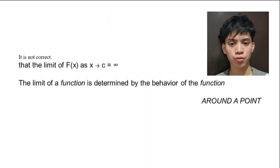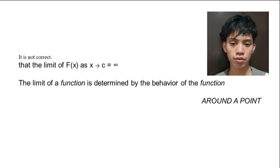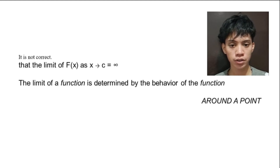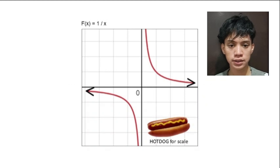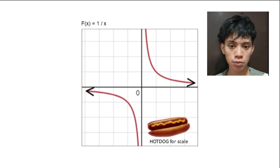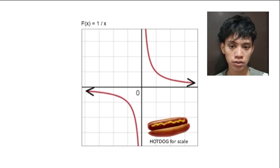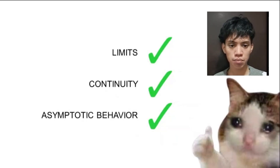It is also not correct to say that the limit of f of x as x approaches c is infinite just because f of c is undefined. The limit as x approaches a point is determined by the behavior of the function around that point. For example, f of x equals 1 over x is undefined at x equals 0. As x approaches 0 from the positive side, f of x goes to positive infinity; from the negative side, f of x goes to negative infinity. Therefore the limit of f of x as x approaches 0 does not exist. You must use concepts like limits, continuity, and asymptotic behavior to examine the function surrounding an undefined point.